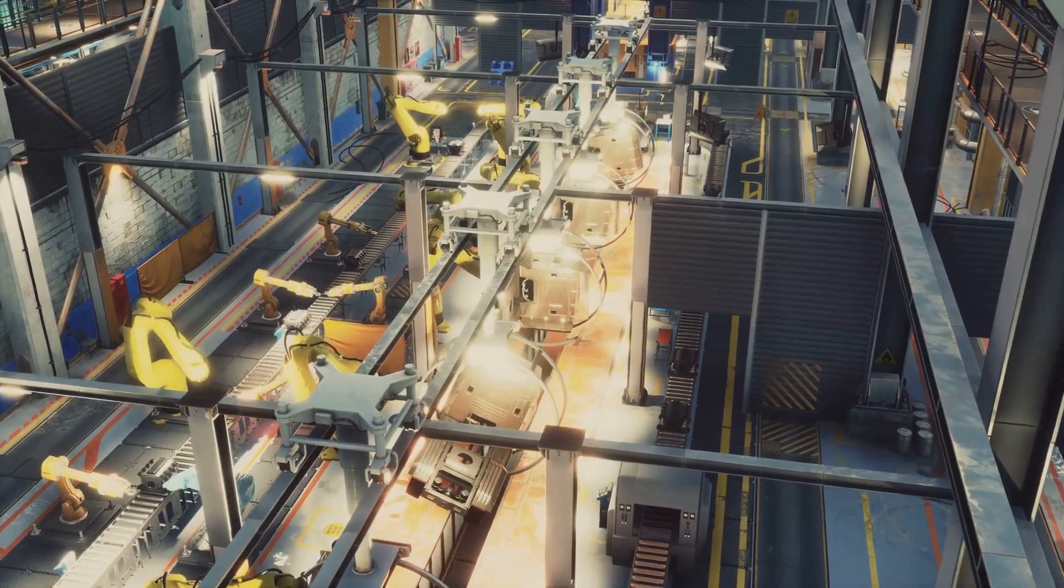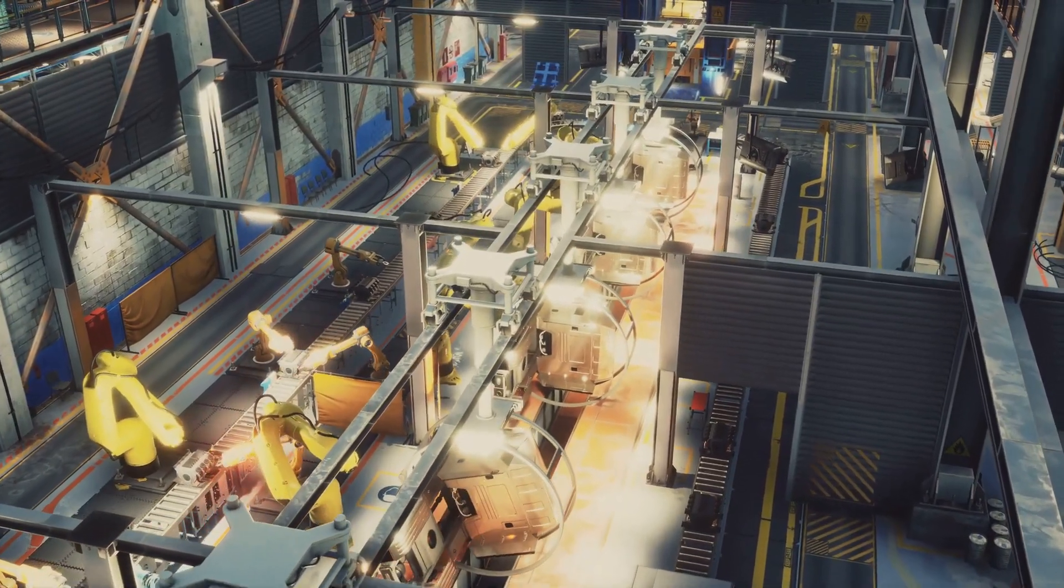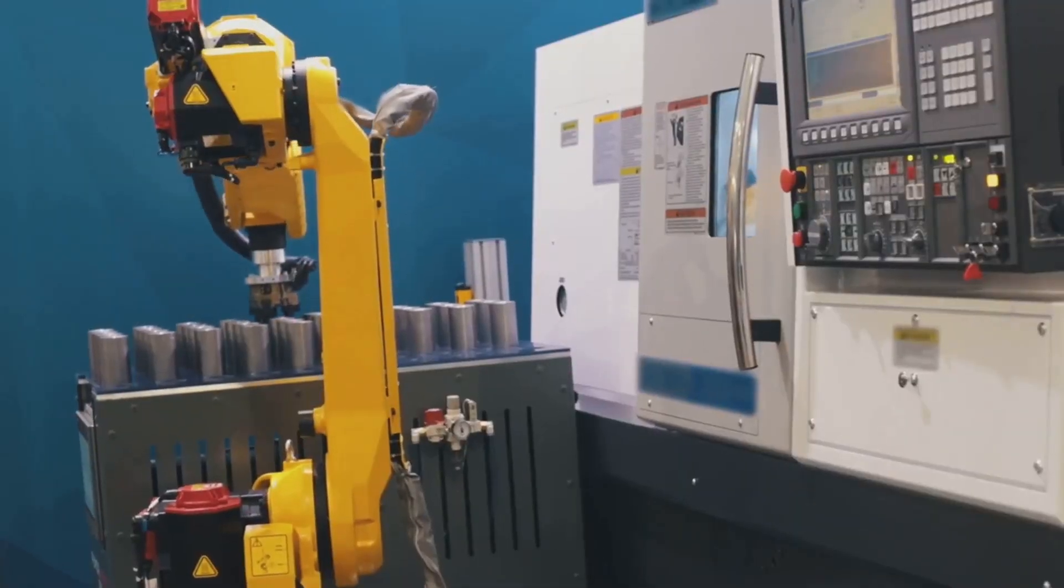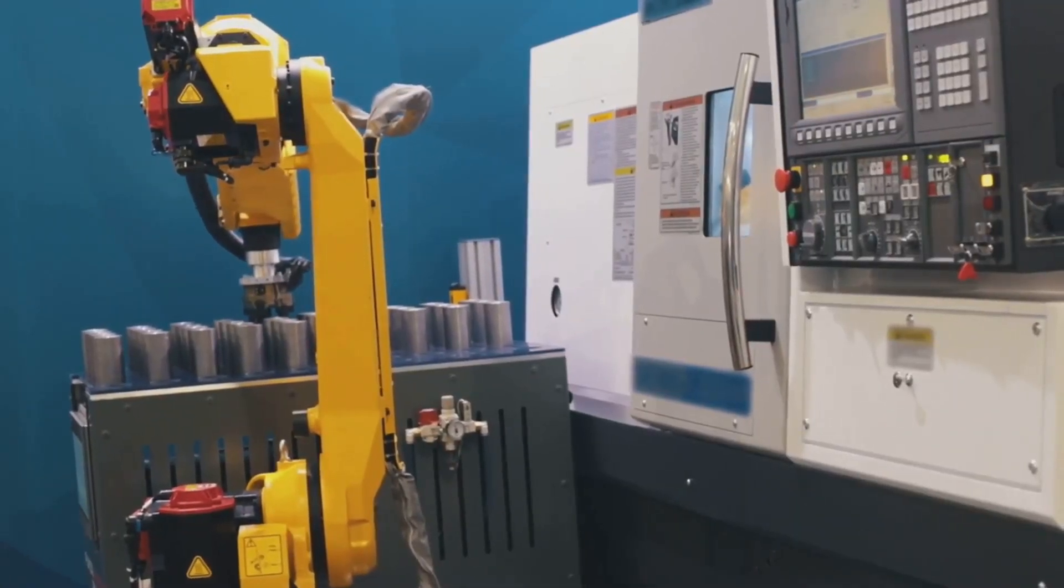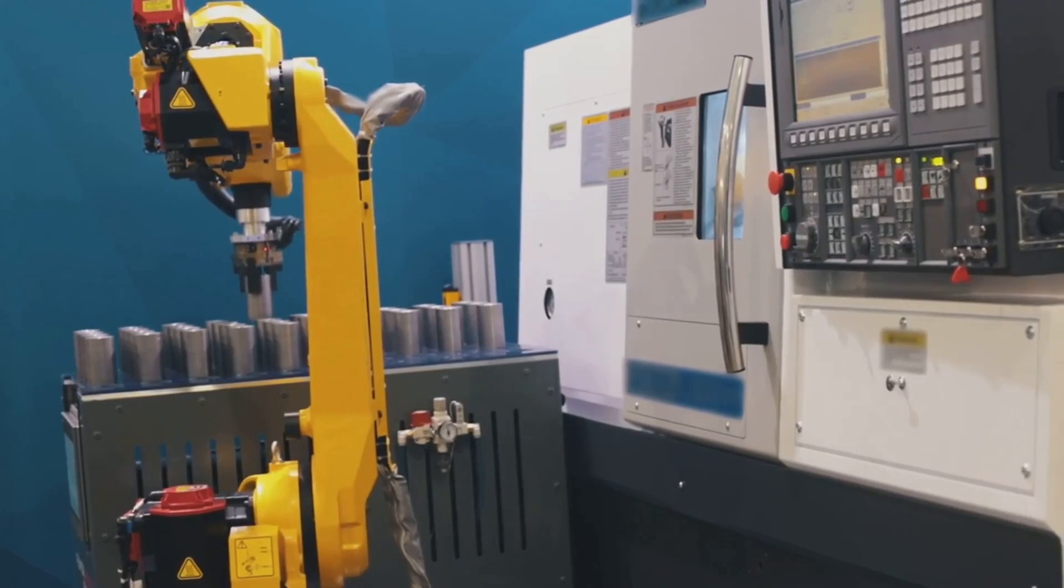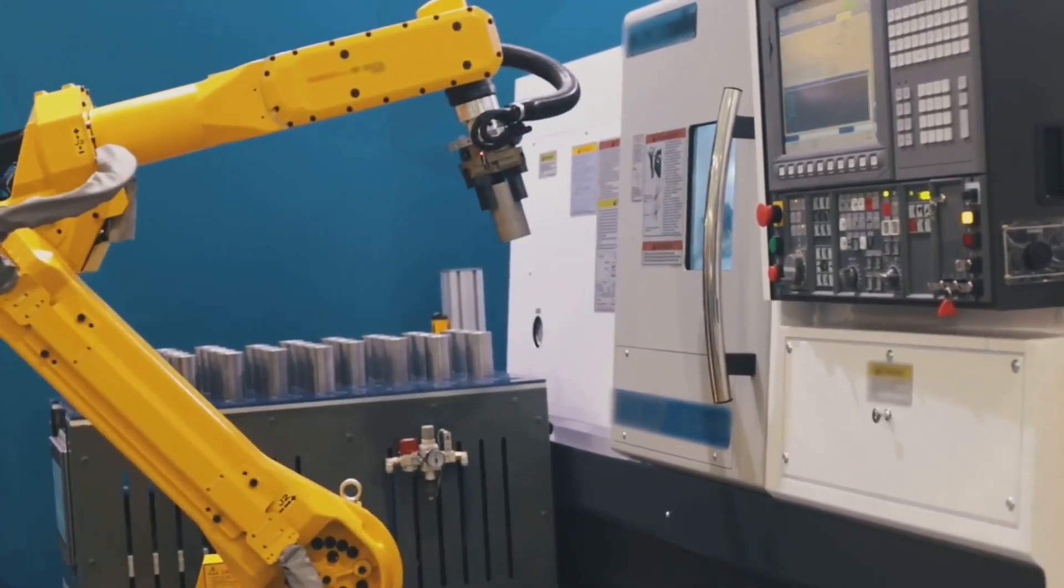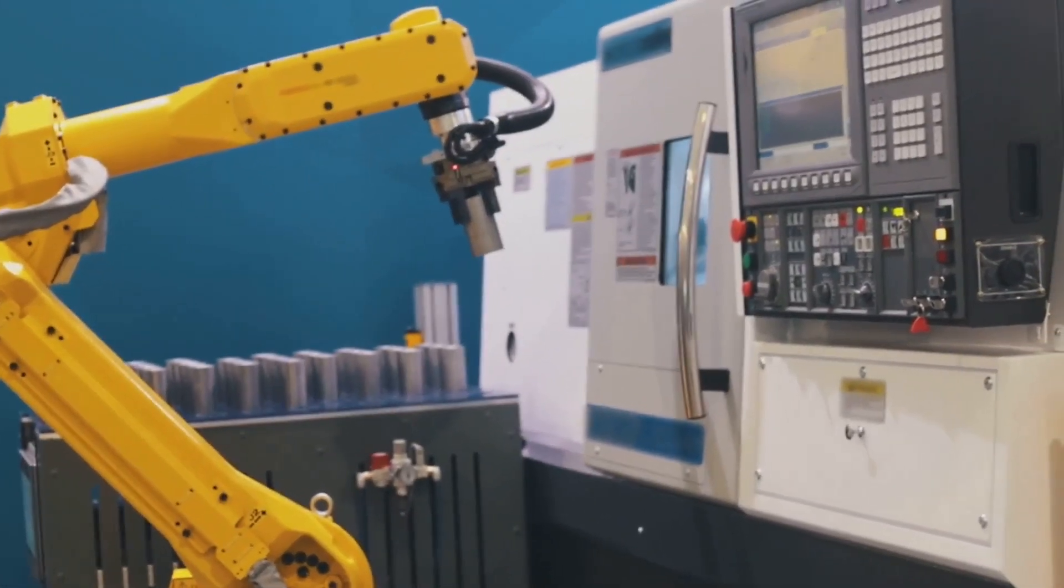The 1960s saw the development of the first industrial robot, the Unimate. This mechanical arm, used in a General Motors assembly line, revolutionized the manufacturing industry forever. It marked the dawn of a new age where robots started to take over repetitive, mundane tasks, allowing us humans to focus on more complex and creative endeavors.